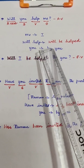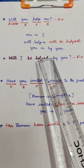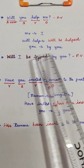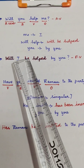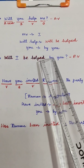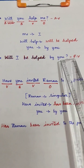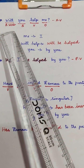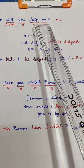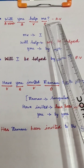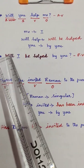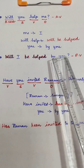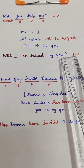So 'Will you help me?' is the active voice sentence. 'Will I be helped by you?' is the passive voice sentence.